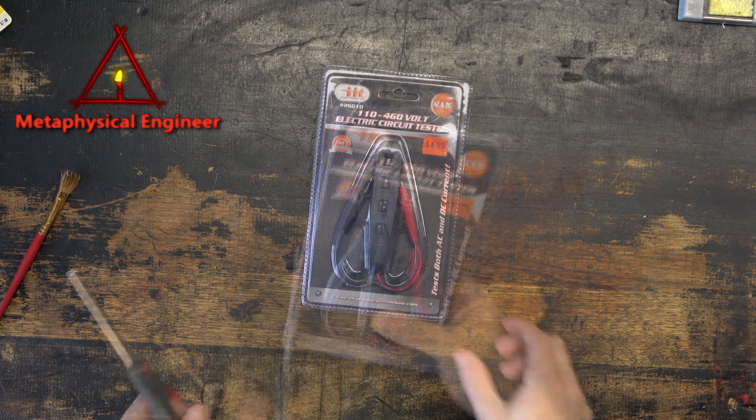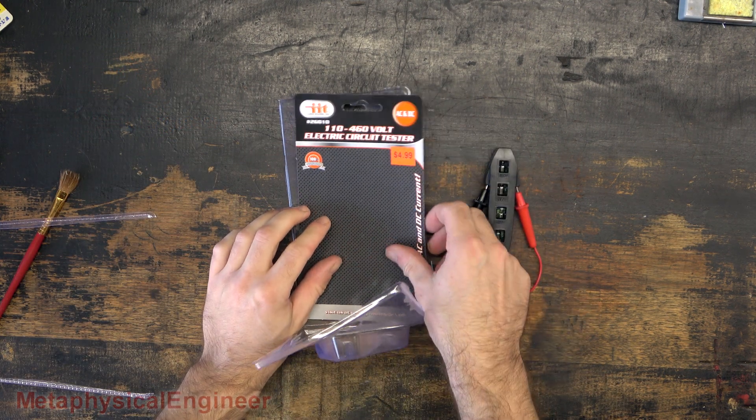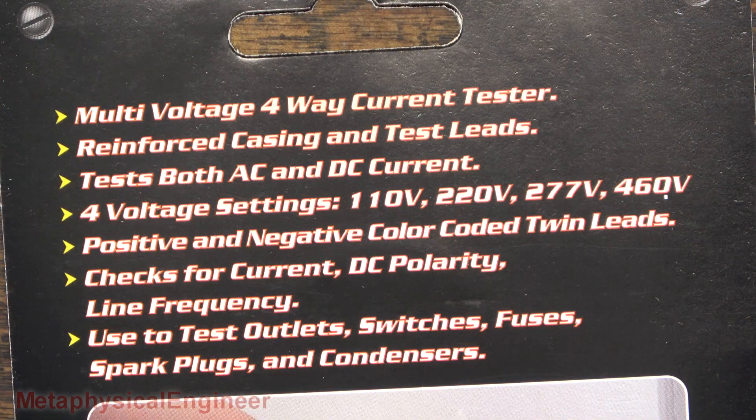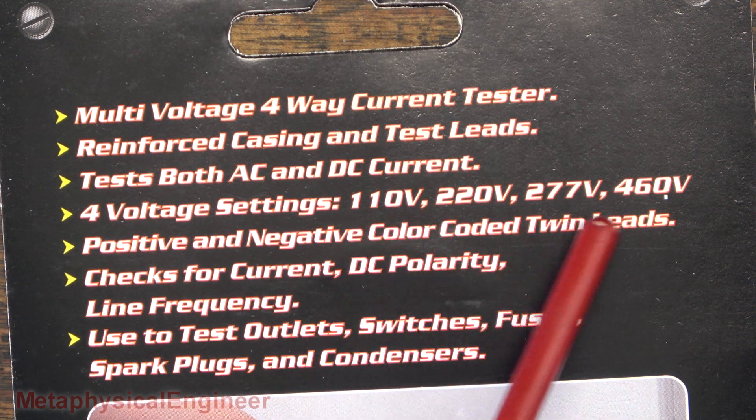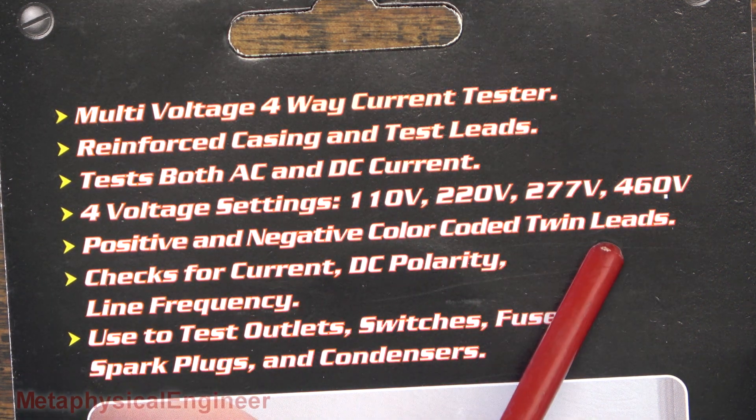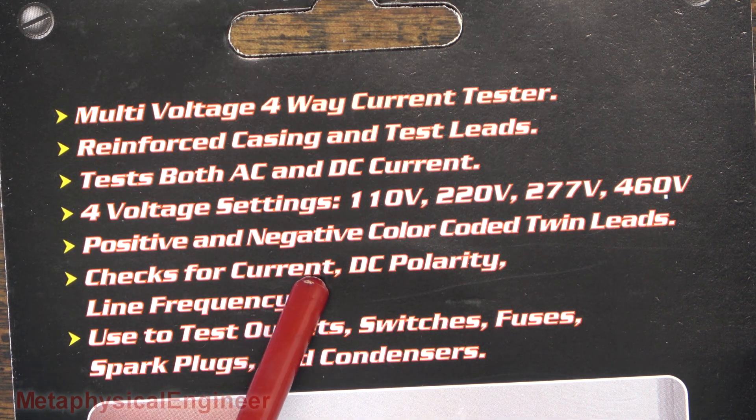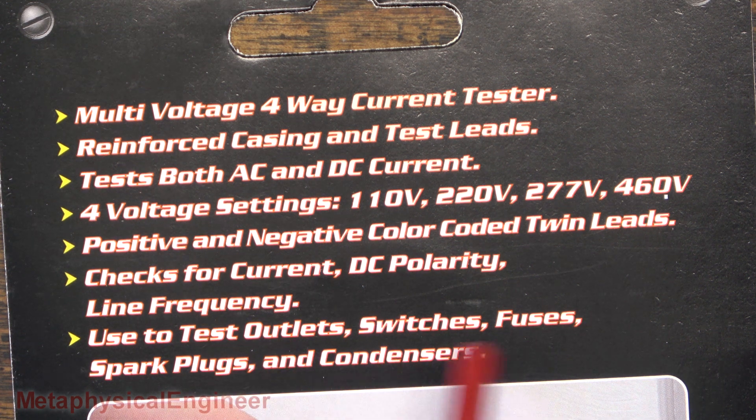Let's see what we got in here. Got the unit. Are there instructions? No instructions. This is all the info we got. Four-way tester, AC and DC, four voltage ranges, color-coded leads, checks current, polarity, and line frequency. I'm guessing they mean voltage, this is not a current measurement device, and can be used to test a variety of equipment.